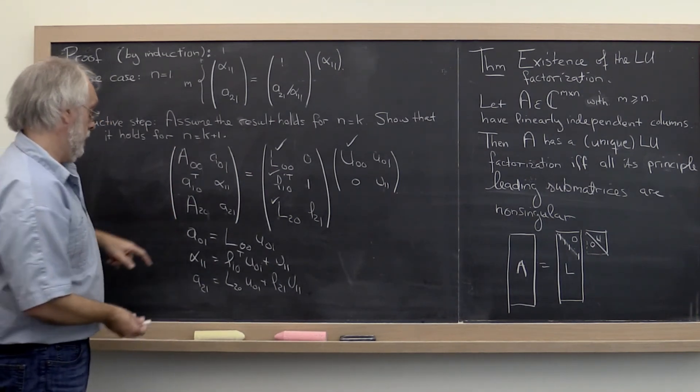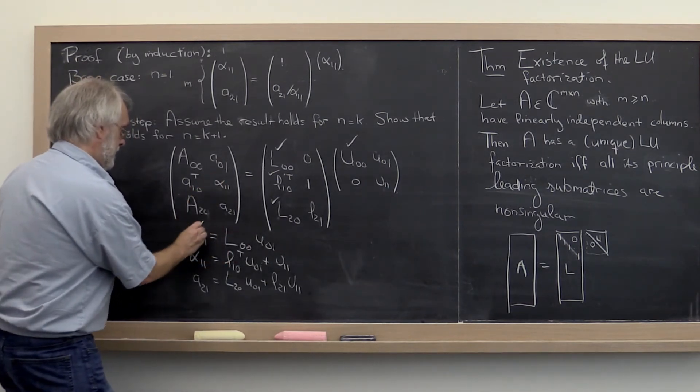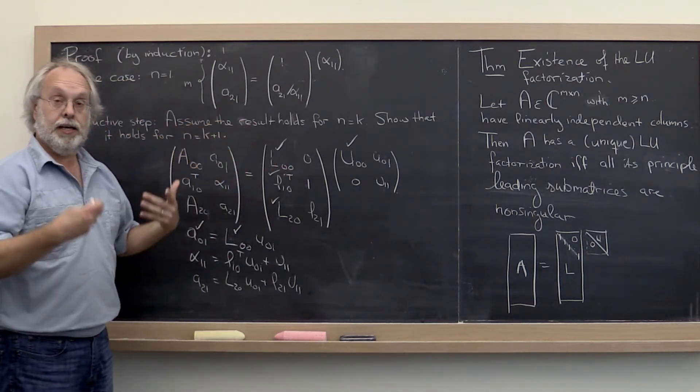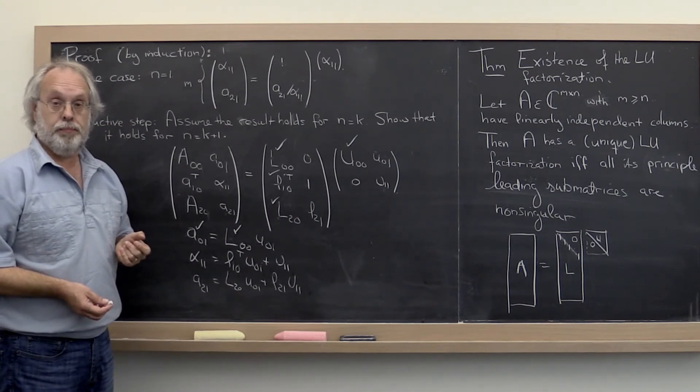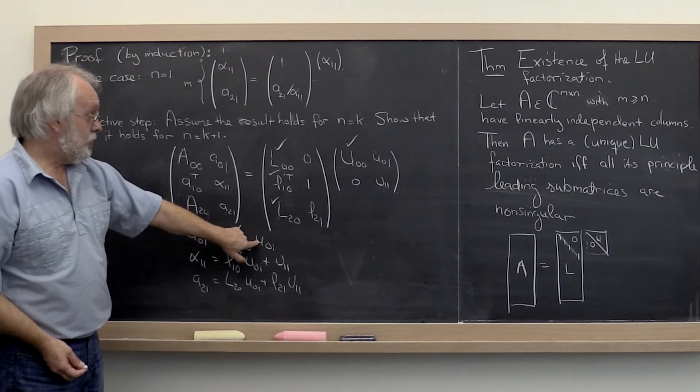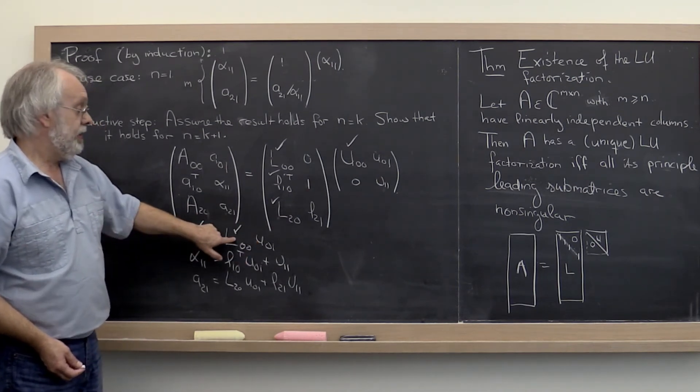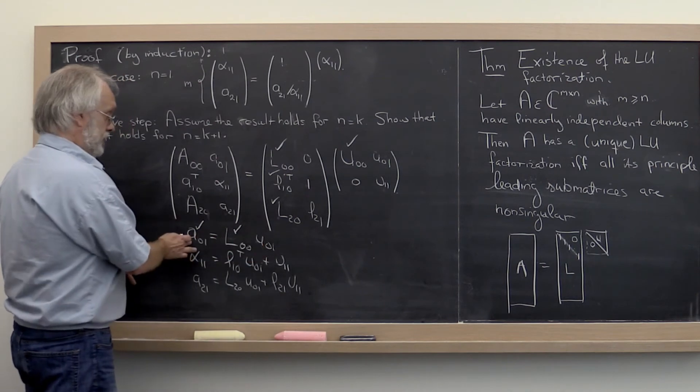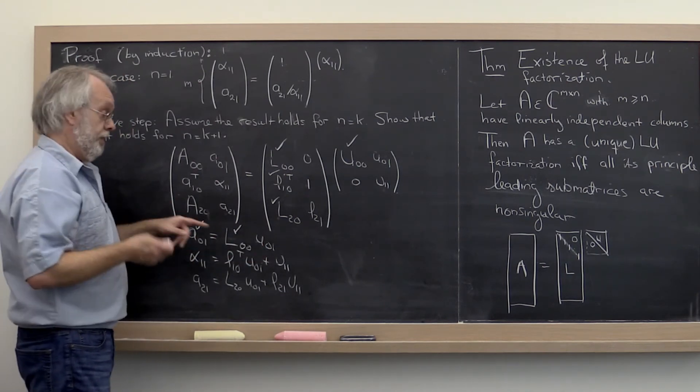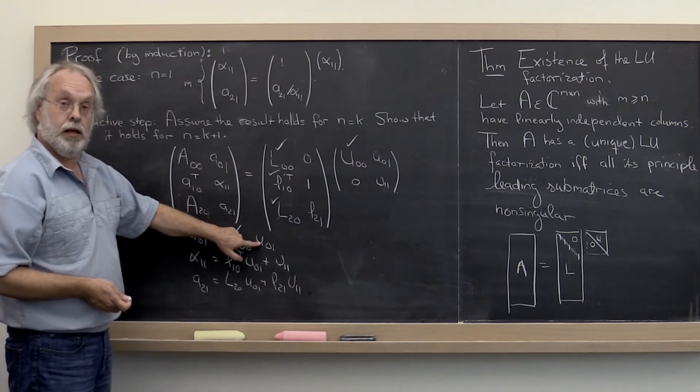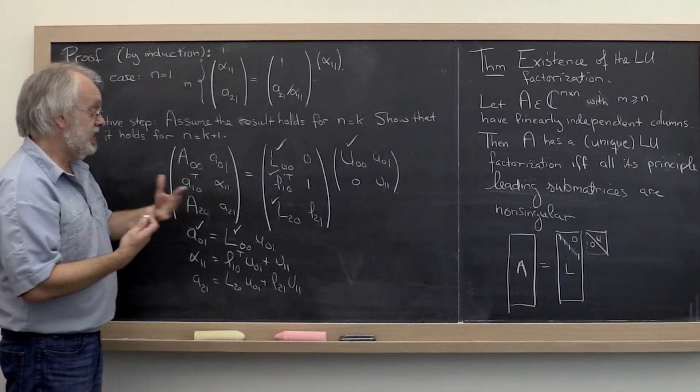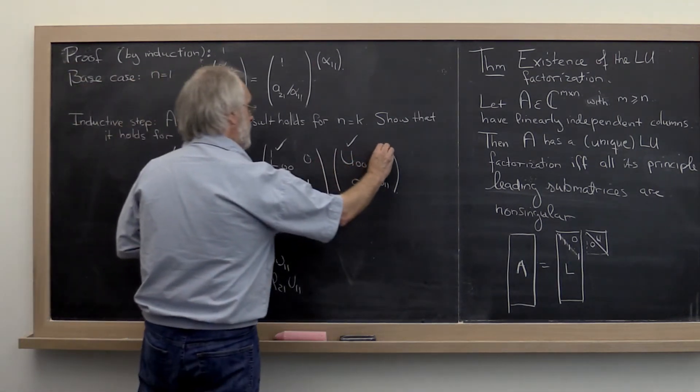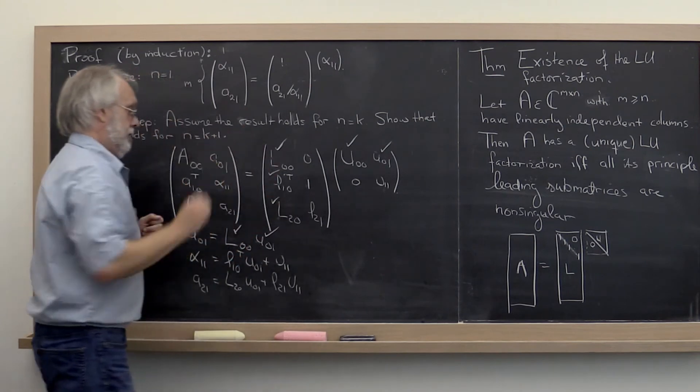Now let's look at the first one. We know what A01 is. And we know what this L is. And we know that L00 has ones on the diagonal and therefore must be non-singular. What does that mean? That means that U01 can be uniquely determined from A01 and L00. By solving L00 times U01 is equal to A01. So we've determined that it's unique and we've given ourselves a way of computing it by saying it's a matter of solving a lower triangular system. We're good. So now we know that this here is unique and we know how to compute it.